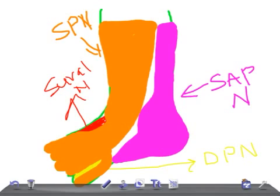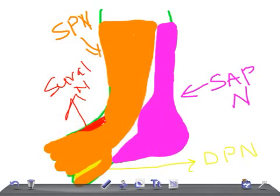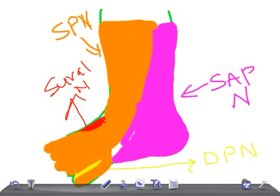So the remaining area — let me redraw this to include this one and this one — you can see here the superficial peroneal nerve covers the majority of the dorsal foot.